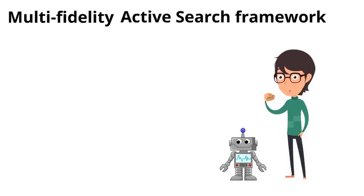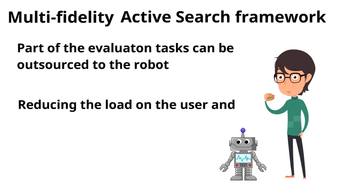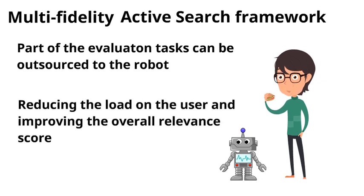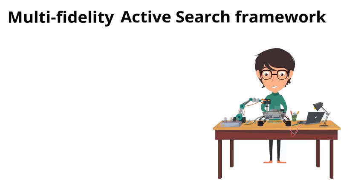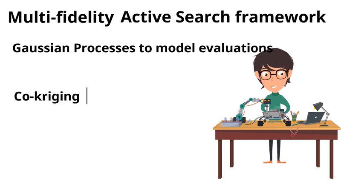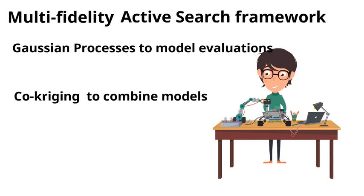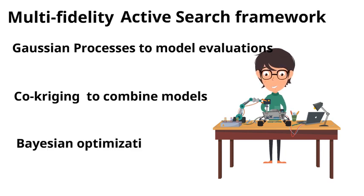The multi-fidelity framework reduces the load on the user during the evaluation routine, because part of it will be outsourced to the robot. The controller employs Gaussian processes to model and predict evaluations. We use the co-kriging method to combine users' and robots' responses. Then we apply Bayesian optimization to pick items for evaluation.